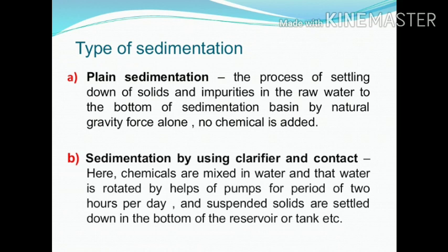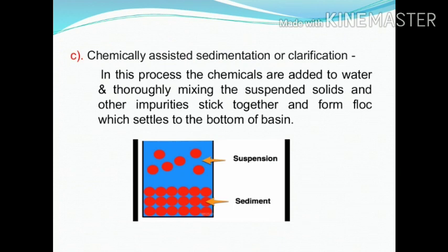The next type is sedimentation using a clarifier and contact. Here we use chemicals such as coagulants — for example, alum or sodium carbonate. The chemical makes smaller particles combine into larger, heavier particles, which then settle to the bottom of the sedimentation tank. Another type is chemically assisted sedimentation or clarification, where chemicals are added to the sedimentation tank and mixed so that suspended solids and other impurities combine to form heavier particles that settle to the bottom of the basin.